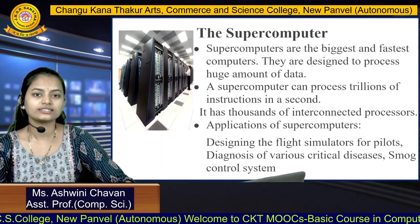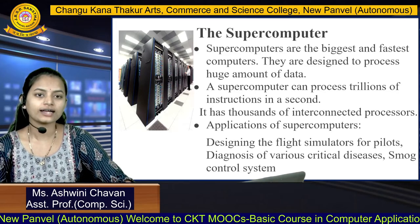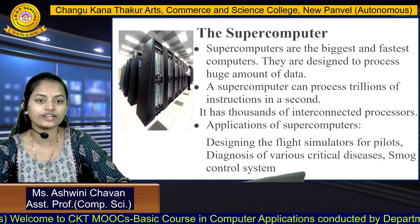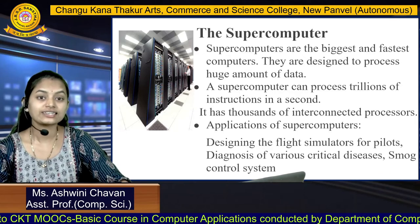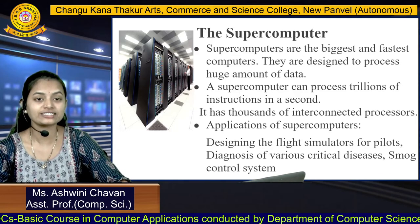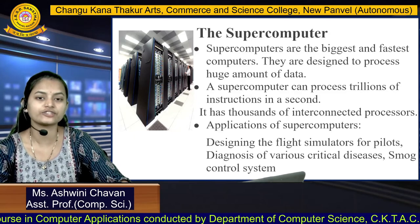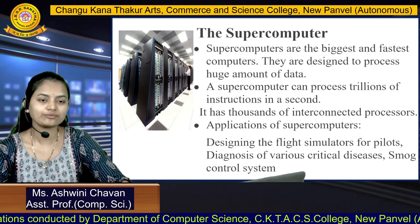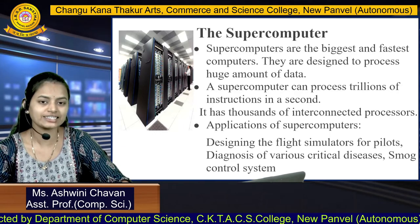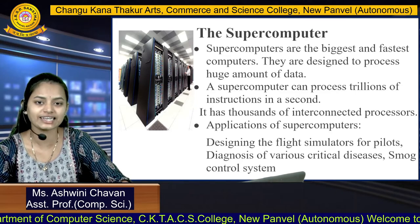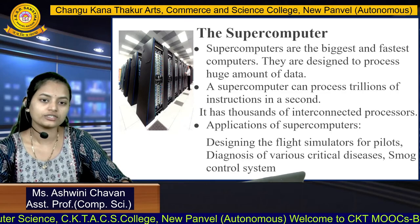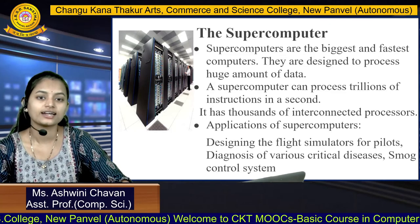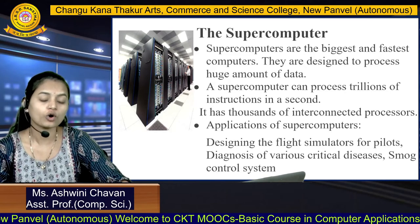The next type is the supercomputer. Supercomputers are the biggest and fastest computers, designed to process huge amounts of data. A supercomputer can process trillions of instructions per second. It has thousands of interconnected processors that work simultaneously and process data in milliseconds. Applications include designing flight simulators for pilots, diagnosis of critical diseases, and smoke control systems.